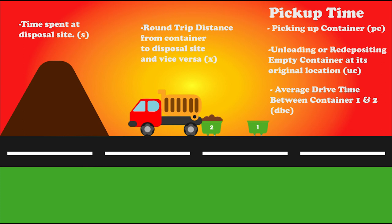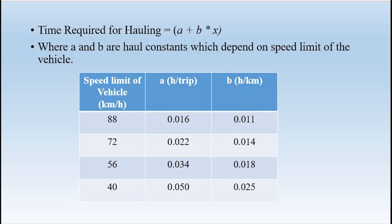Now, if we look at the distance x covered by the truck, we can calculate the time required for hauling the waste, which is a + bx, where a and b are constants that depend upon the speed limit of the truck, and x is the round trip distance covered by the truck — that is, from the container to the disposal site and back. This falls under the category of haul distance.